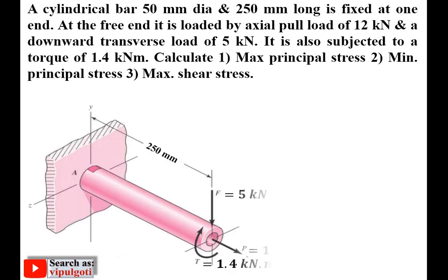First, try to understand the given description with the help of the figure — that is very important. This is the 50 mm diameter cylindrical bar, 250 mm long, fixed at one end. Here you can see it is supported at one end (fixed) and the other end is free. At the free end it is loaded by an axial pull load of 12 kN — axial means on the axis of the rod. The line of action of force is exactly on the axis of this rod, and the word 'pull' means tensile load, given as 12 kN.